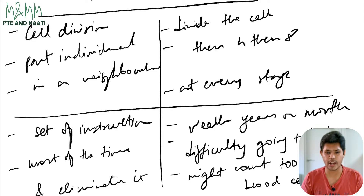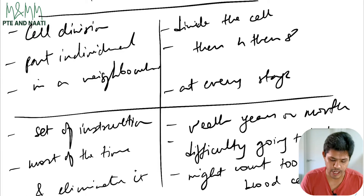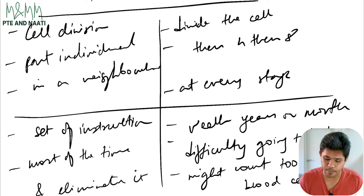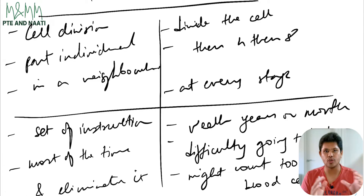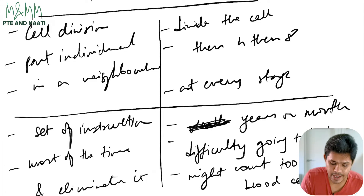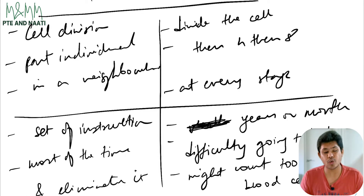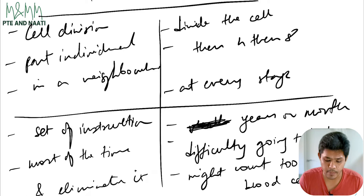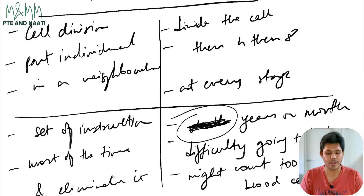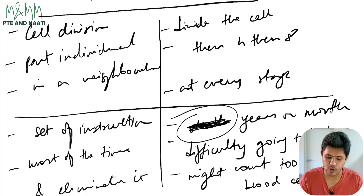So I'll quickly go through: cell division, part individual, in a neighborhood, set of instructions, most of the time, and eliminates it, divide the cell, then four, then eight, at every stage. If there is something you are not able to understand because of your handwriting, immediately cancel it so you don't attempt to speak it. For example, if I don't understand a word, I cancel it — years or months, difficulty going to the bathroom, might count too many blood cells.